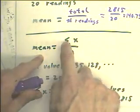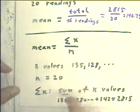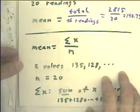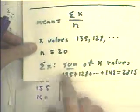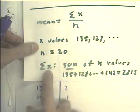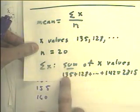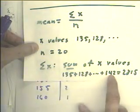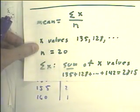Again, it's the total, the sum of all the numbers, divided by the number of things that we added up. And right there, we have just a little note that the sum of x means the sum of the x values: 135 plus 128 and so on to get to 2815.